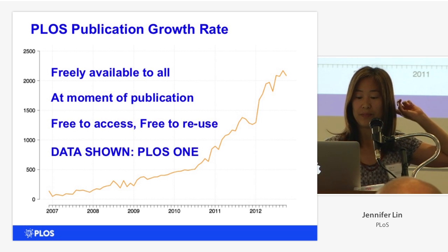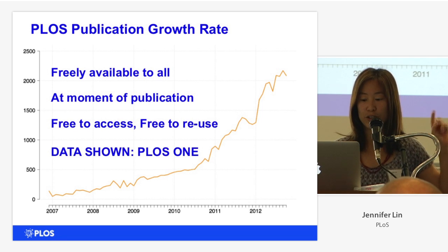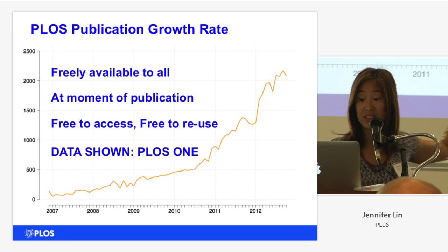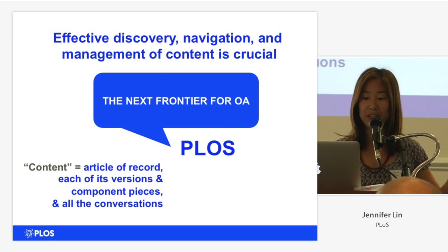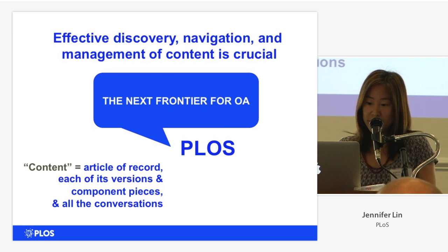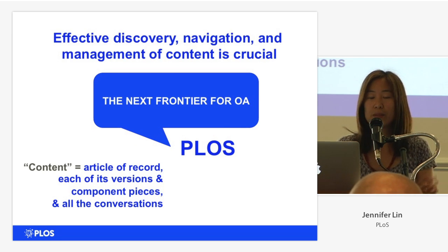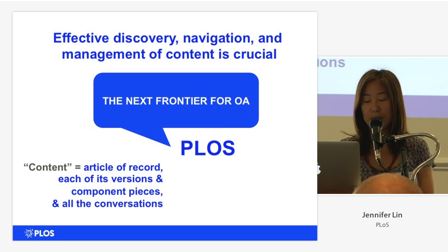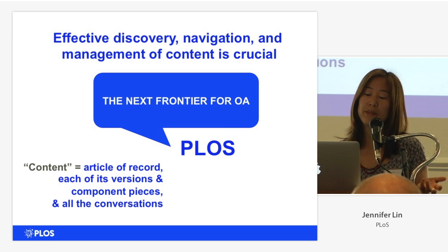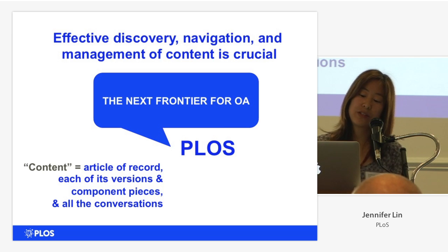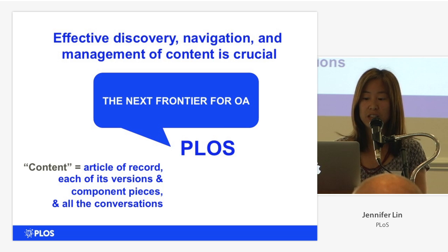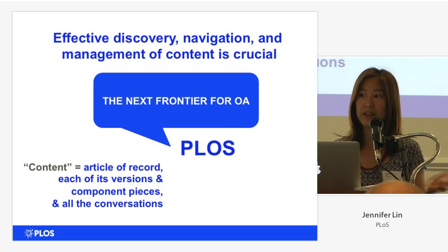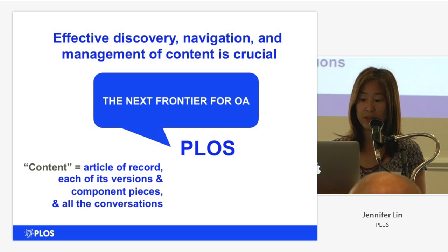The data shown here is just of one journal, our largest one, PLOS One. As you can see, it's skyrocketing — there's a lot out there and it's growing. So the next frontier for open access, as we continue to publish more and more research and make it open access, is the complementary and sister goal of making all of this information effectively discoverable, navigatable, and manageable. This is just critical if we are not to groan and fall down from the weight of everything that is out there.